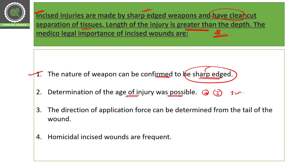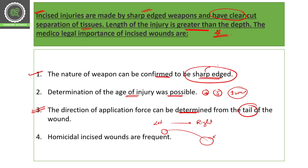The direction of application of force can be determined from the tail of the wound. For example, if the direction is left to right, the tail would be on the right side — where the injury becomes progressively narrower. This is known as tailing of the wound, and incised injuries contain tailing. Homicidal incised wounds are really very frequent and are common in homicidal-type attacks.